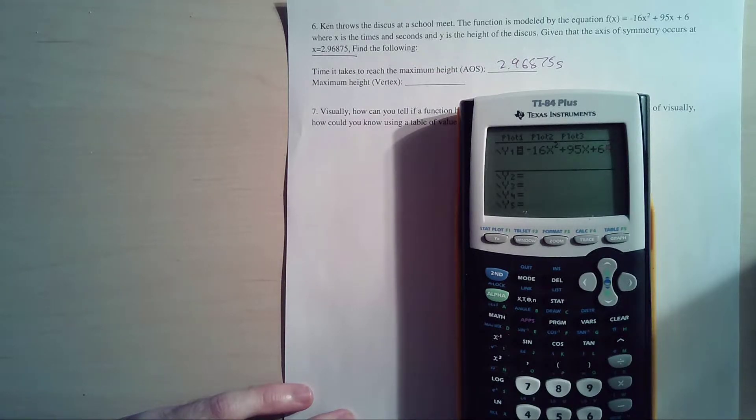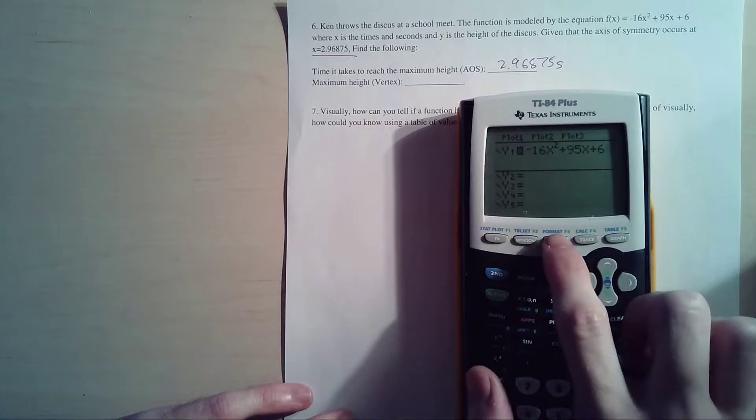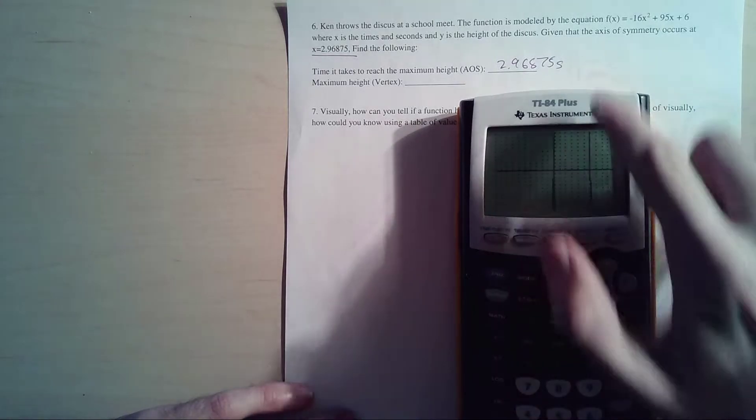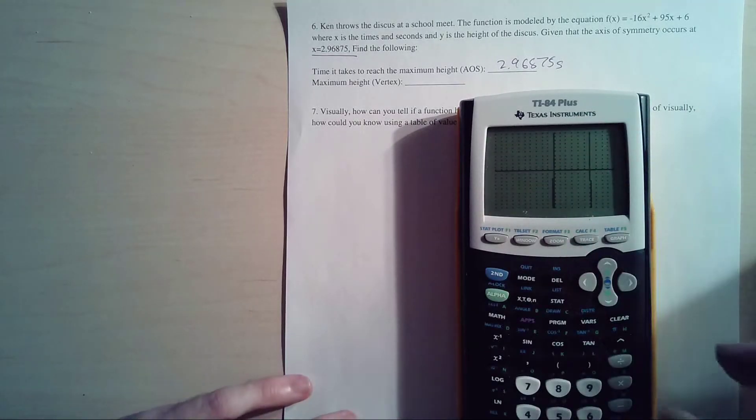Your window might be messed up from when you were graphing earlier, so if you want to fix that window, just hit Zoom and then Standard - that's the number 6 button. So that showed up. It doesn't even look like a parabola. It actually is a parabola, it goes up like this, but that's not relevant for the question.